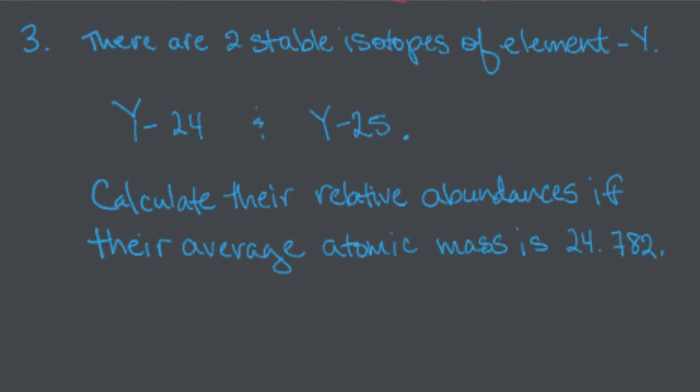There are two stable isotopes of element Y, doesn't matter what it is, and one of them is Y-24, the other one is Y-25, and we want to know what their relative abundances are.